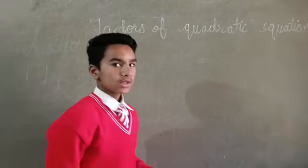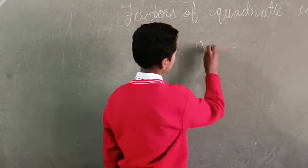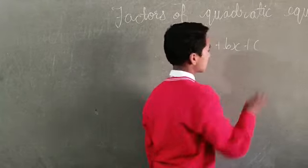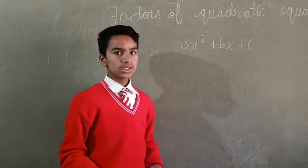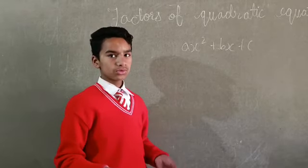So, dear friends, the general form of Quadratic Equation is ax² + bx + c. A quadratic equation is a polynomial of degree 2, 2 factors and 2 zeros.